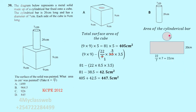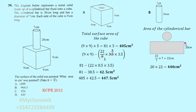Working out the area of the rectangle: length times width equals 20 multiplied by 22, which gives 440 centimeters squared. That is the curved surface area of the cylindrical bar.